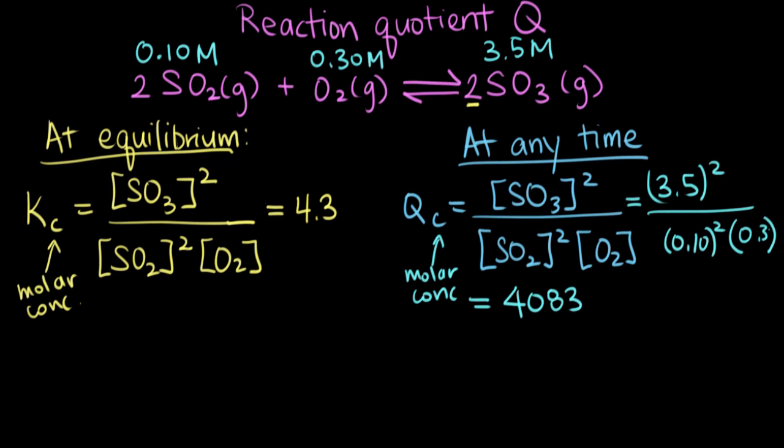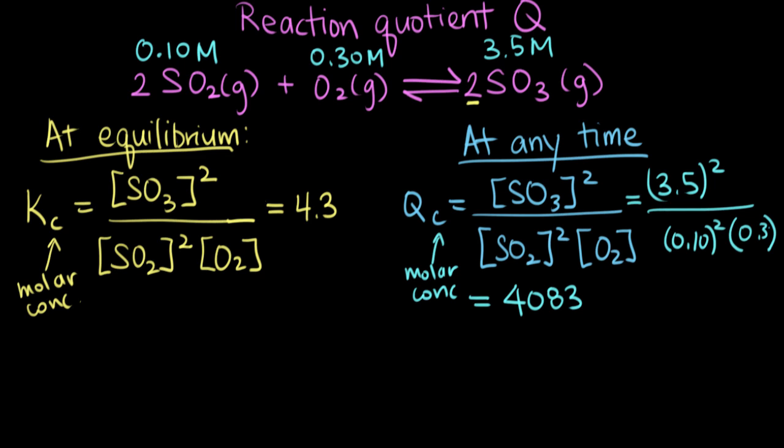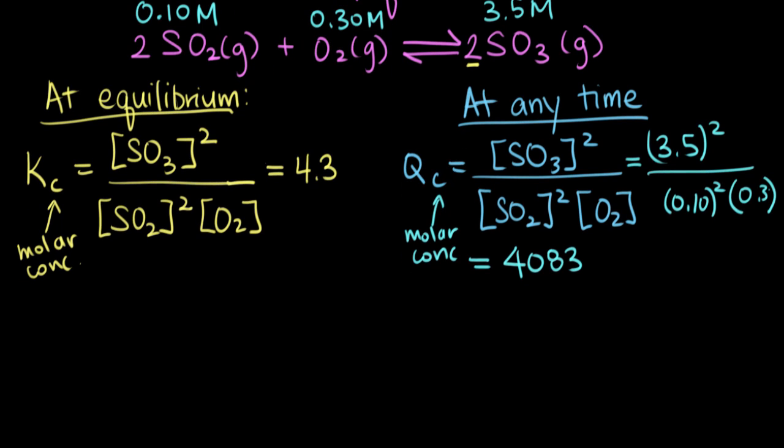So now we know how to calculate Qc. Next we're going to talk about what it tells you. There are three possible scenarios. When Q is equal to K, that tells us we're at equilibrium. If at any point you're not sure if your concentrations are the equilibrium concentrations, you can calculate Q and check if it's equal to K. And in this case, it's not.